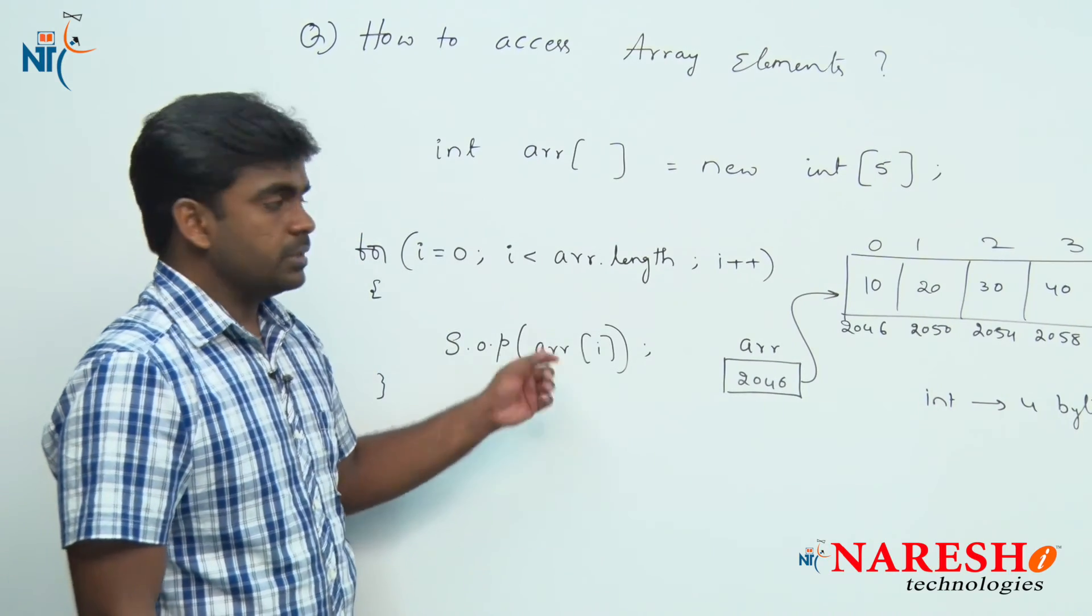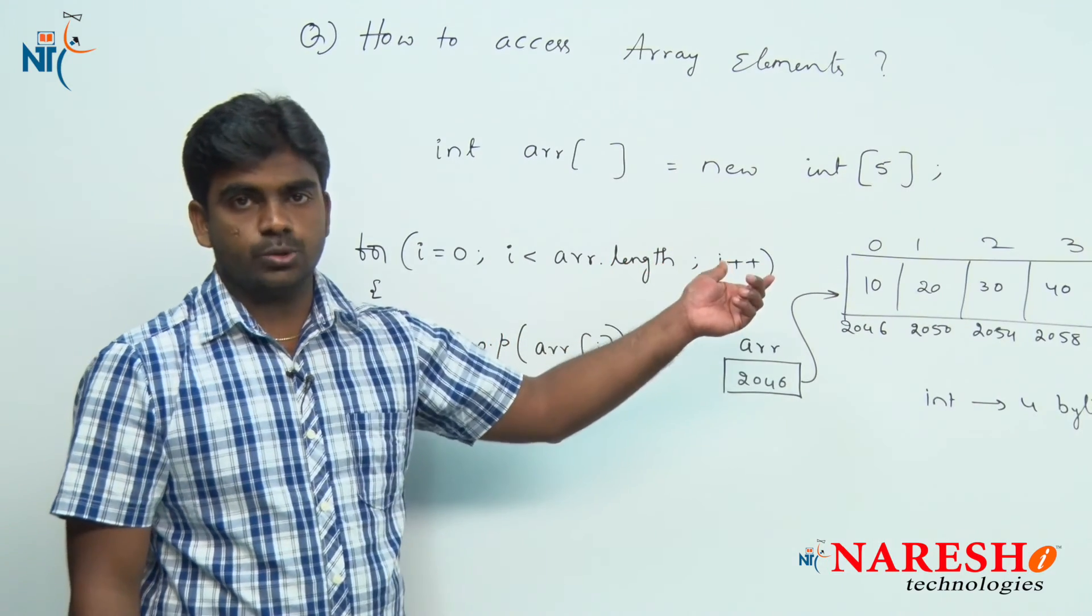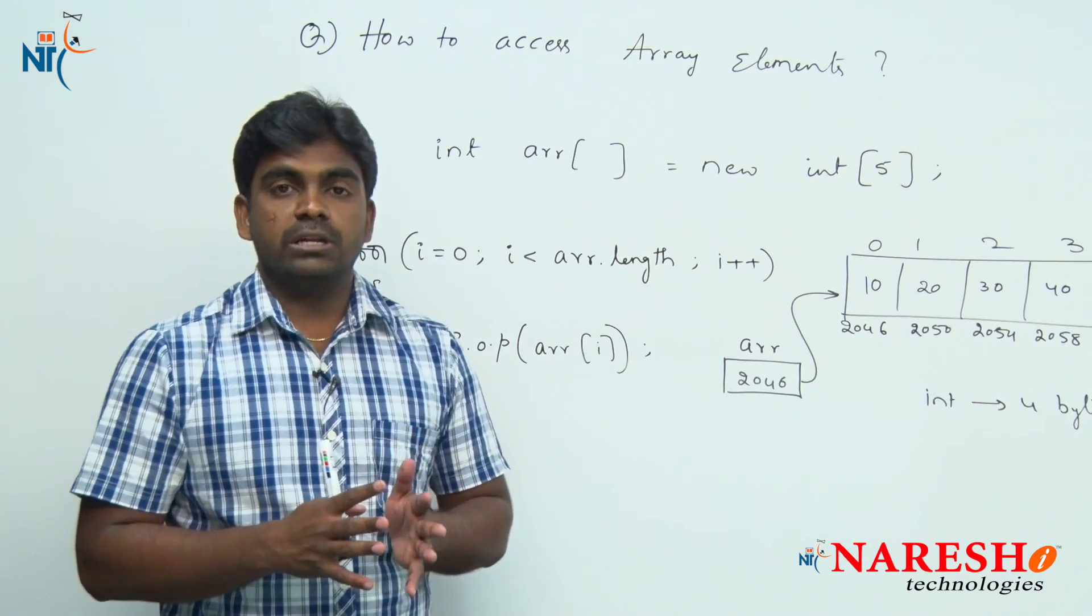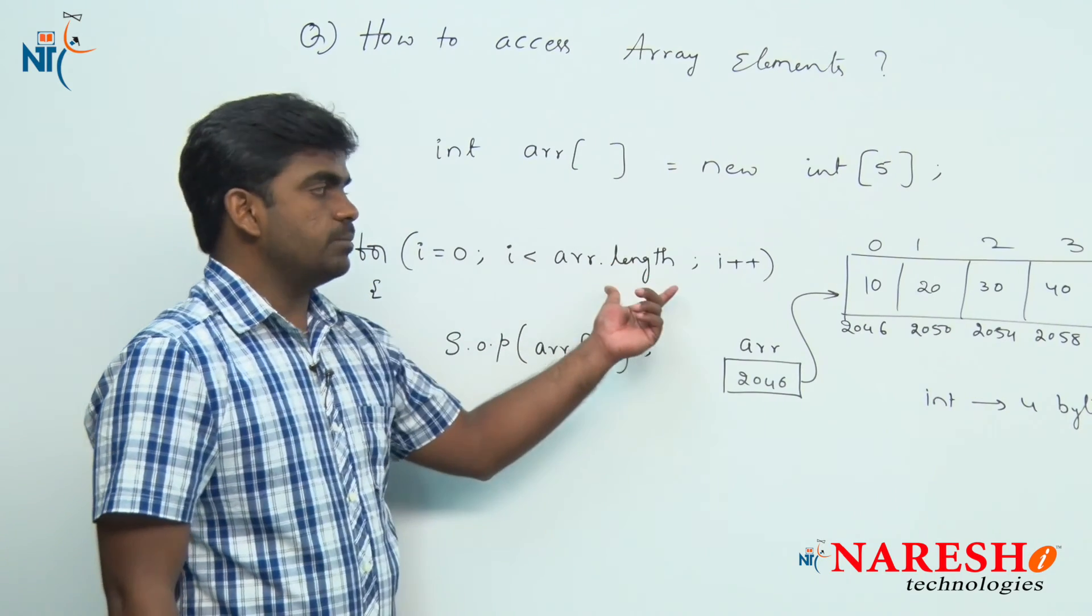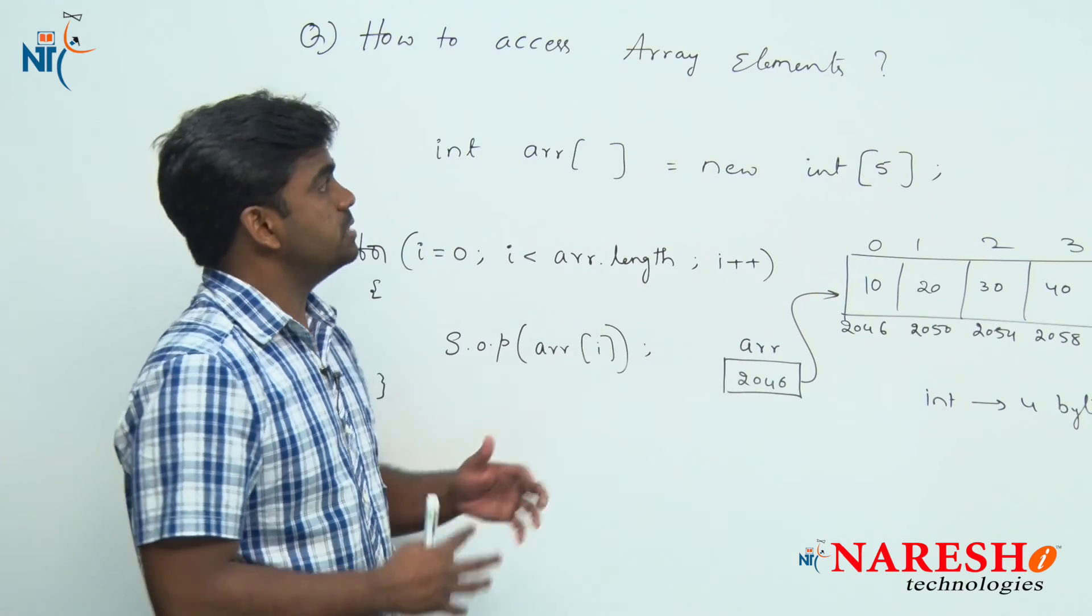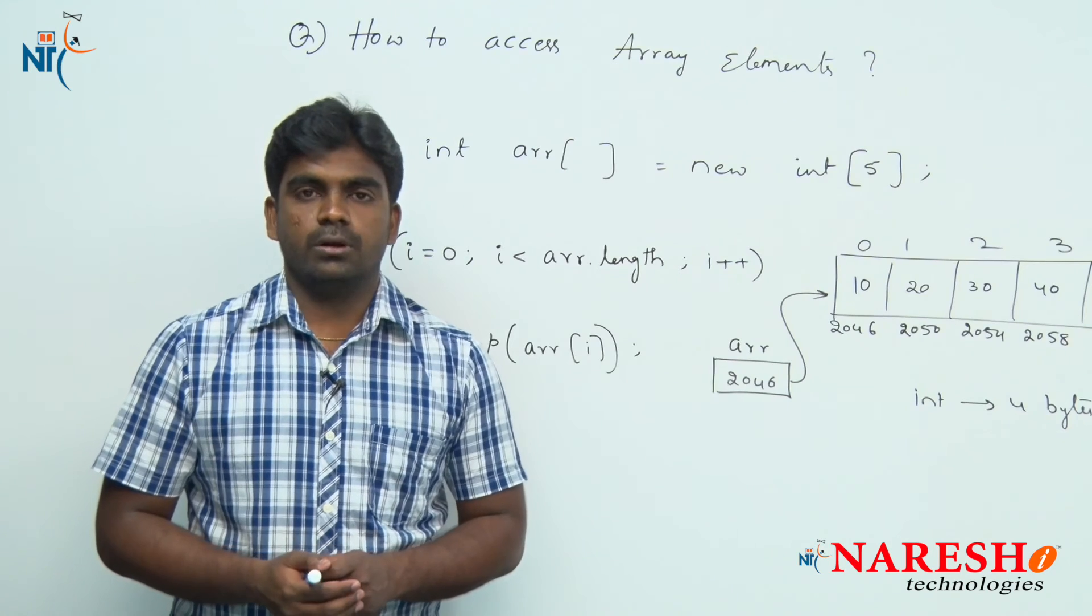Only this much is enough, how to access array elements. Whenever we are storing elements into an array, we are accessing only with the help of index. Index starts with 0 to length minus 1. This is how to access array elements in Java. Hope you understood. Thank you all.